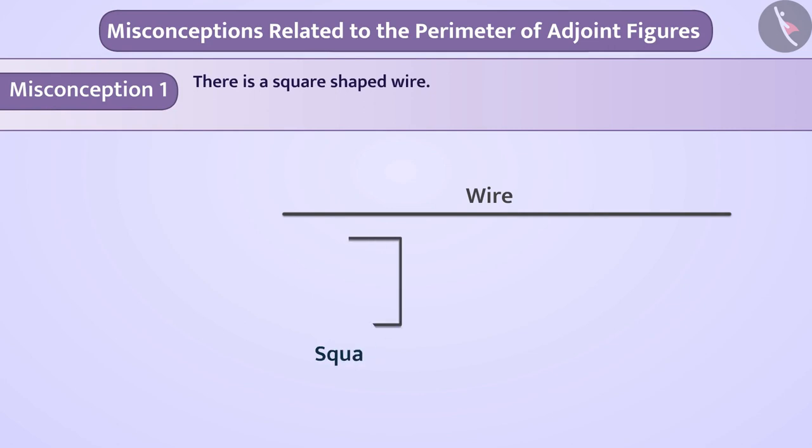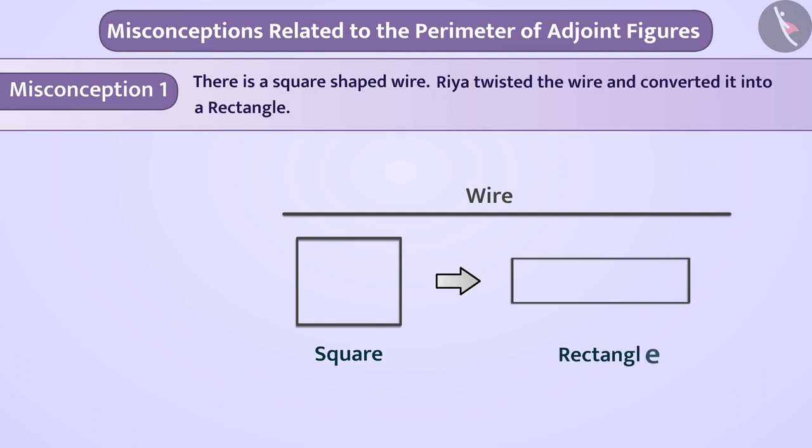There is a square shaped wire. Rhea twisted the wire and converted it into a rectangle. Is the perimeter of square and rectangle different?